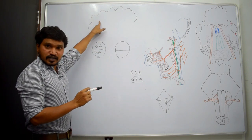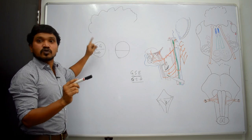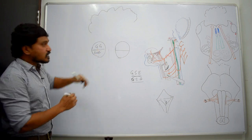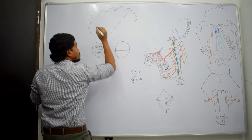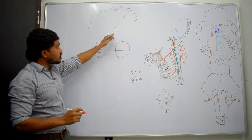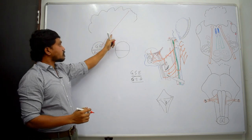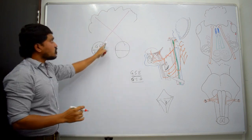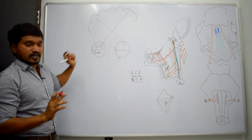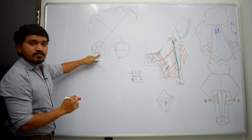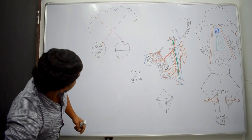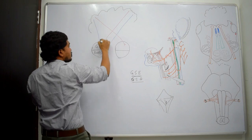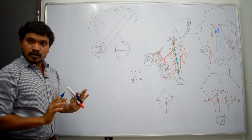Fibers from the cerebral cortex reach the nucleus of cranial nerves — those fibers are called corticonuclear fibers. The corticonuclear fibers for the genioglossus come only from the contralateral side. For the rest of the muscles, corticonuclear fibers come from both sides — that means both contralateral and ipsilateral sides.